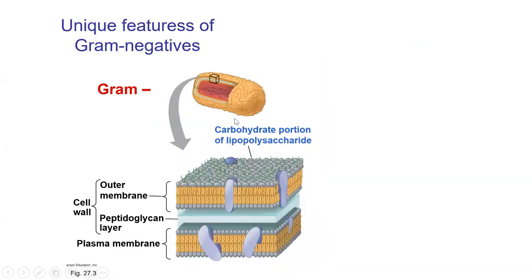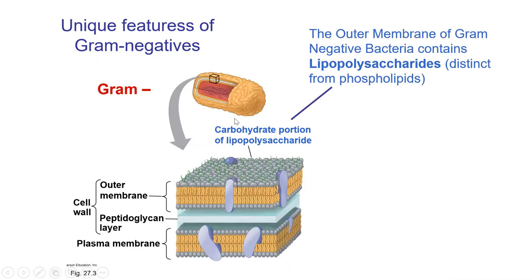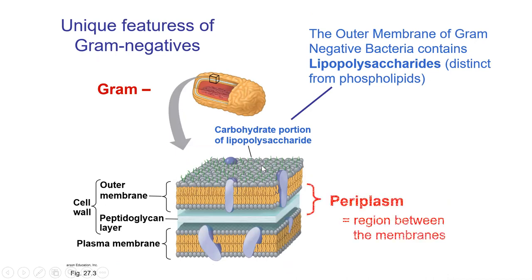Gram-negatives have some unique structures. One is lipopolysaccharide — a unique carbohydrate-lipid structure found on the outer membrane that acts as an endotoxin. The periplasm is also unique to gram-negatives: it's a little compartment where you might have extra enzymes, and some of those enzymes help these organisms resist drugs like antibiotics — not good at all.